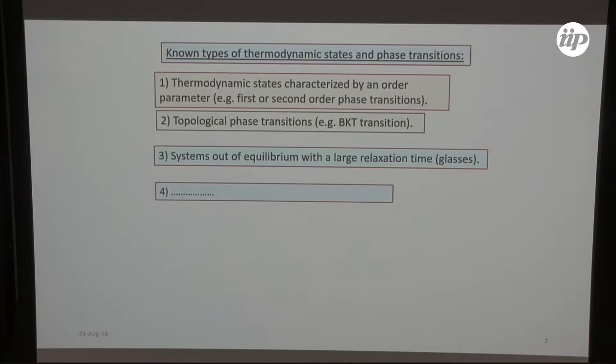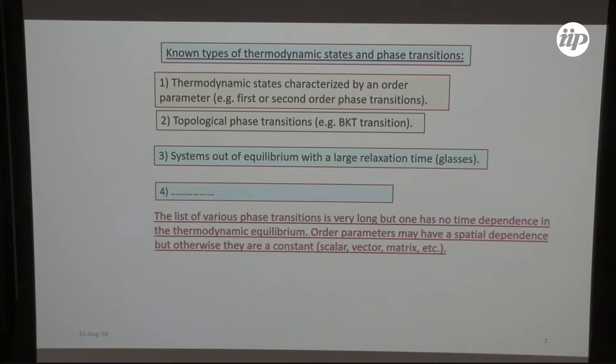So why do I say that this is somehow a new state? We know there are thermodynamic states and phase transitions. One can start with Landau theory of phase transitions. Then we understand that topological phase transitions exist, like Berezinskii-Kosterlitz-Thouless transition. There are systems out of equilibrium with large relaxation time, but this is not a stable thermodynamic state.